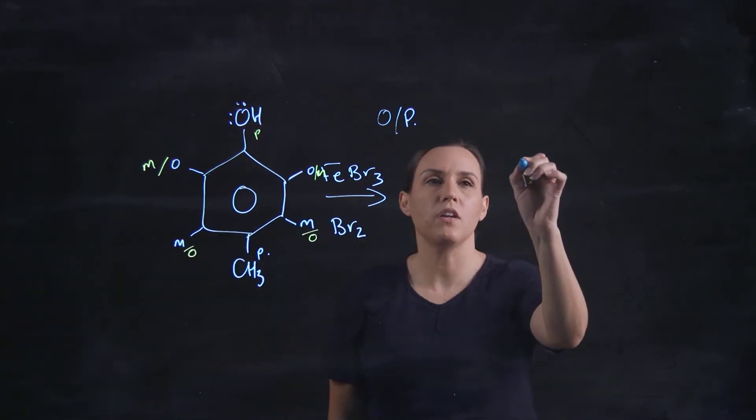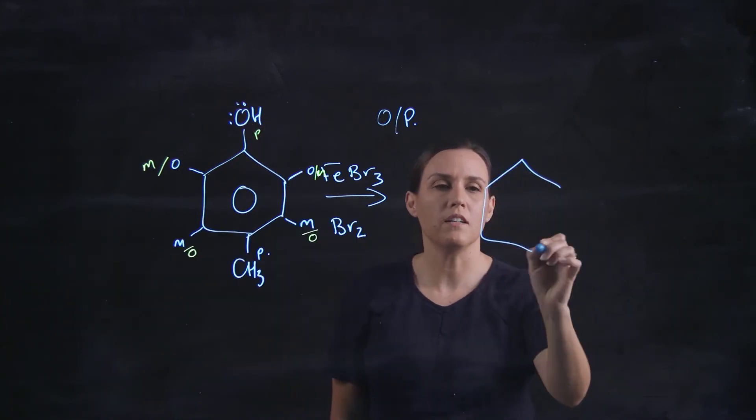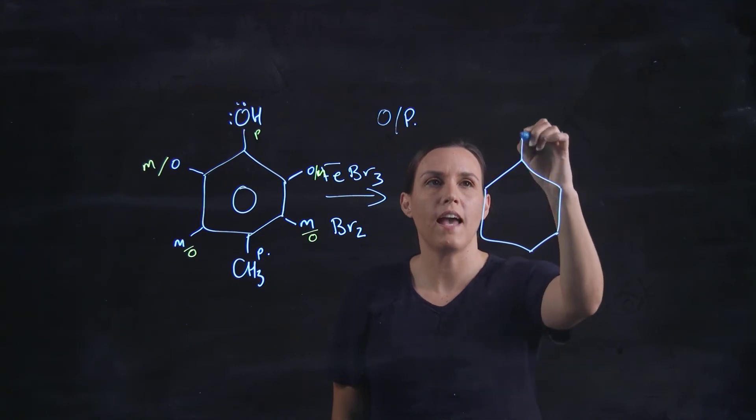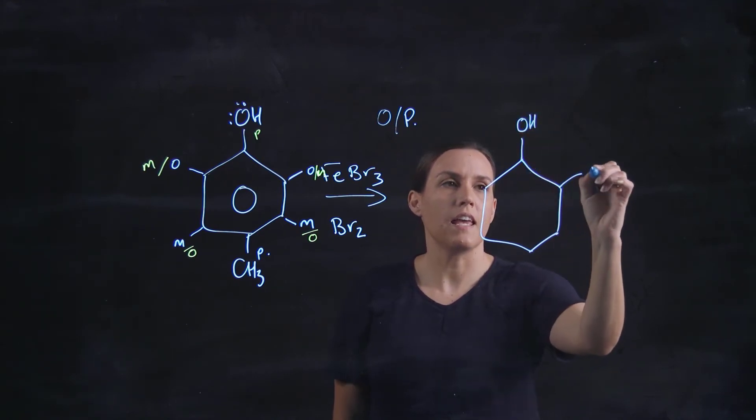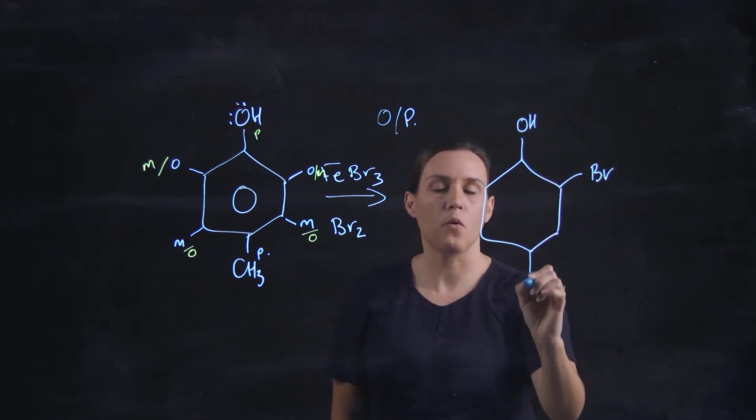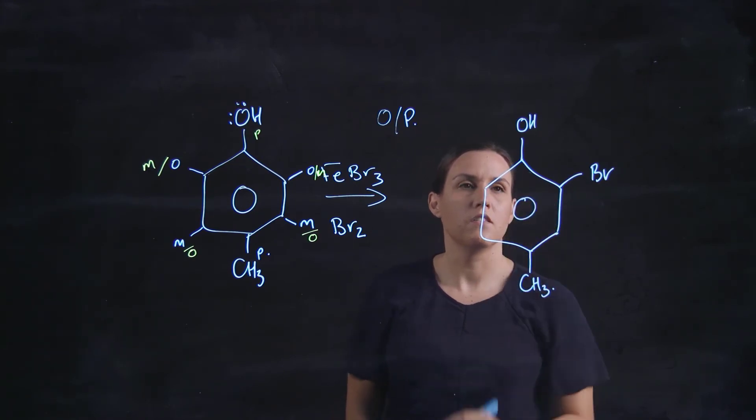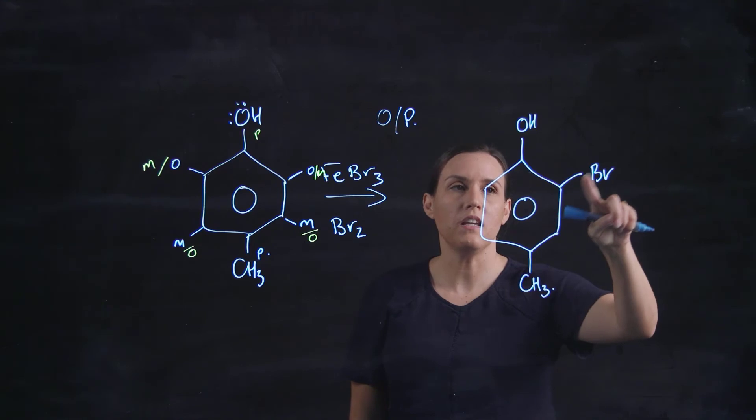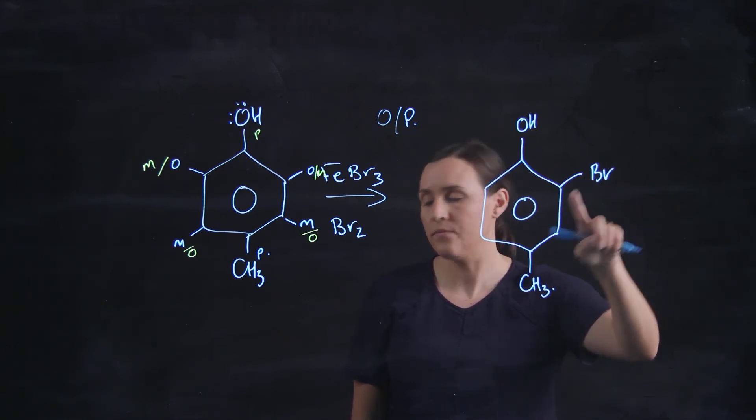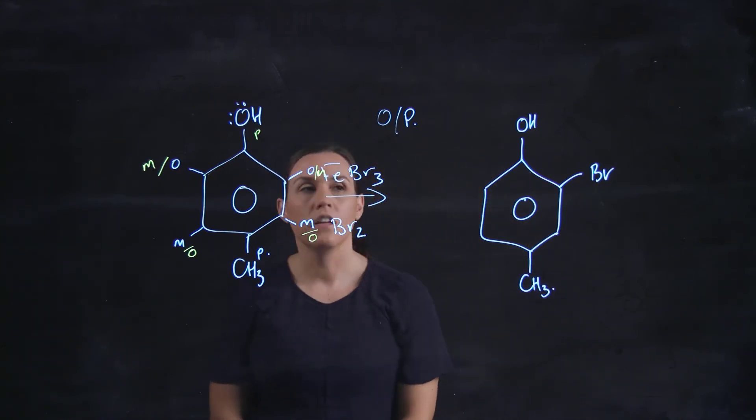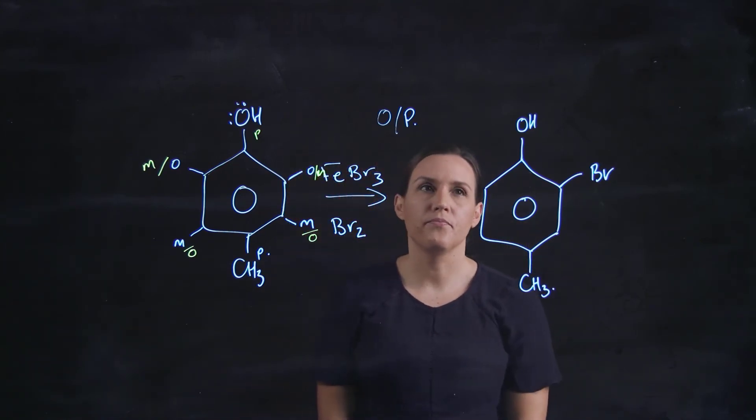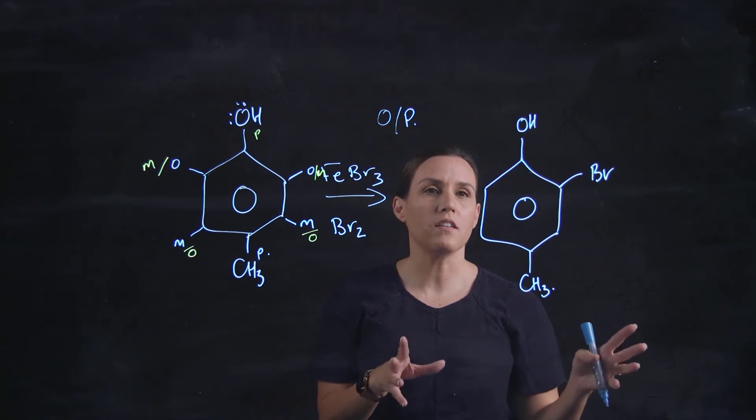So when we're looking at the major product that OH would have the greater influence. So it would definitely put something into that ortho position and that bromine will sit there. So that would be the major product.